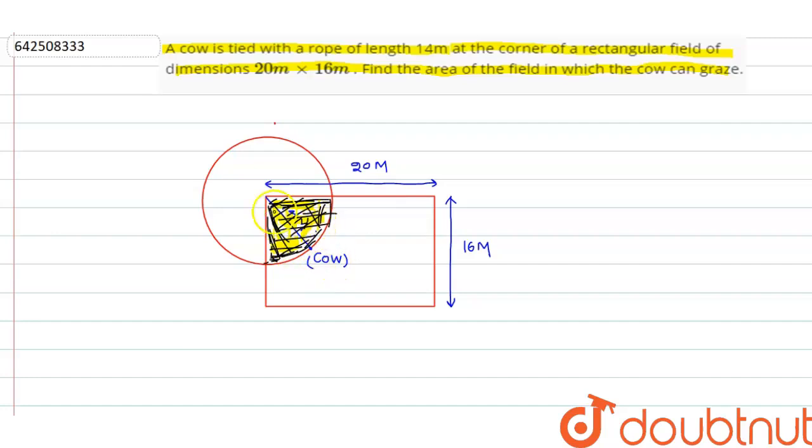So what we need to find is this area - this sector. We know this angle is 90 degrees. So what we do is